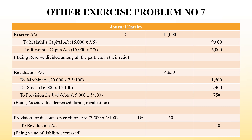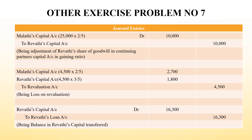And the next entry is provision for discount on creditors. An amount is set aside for this. Suppose we pay our creditors promptly and receive a discount - that discount amount is a gain to us, so we set it aside. That is an asset coming into the business - credit side.